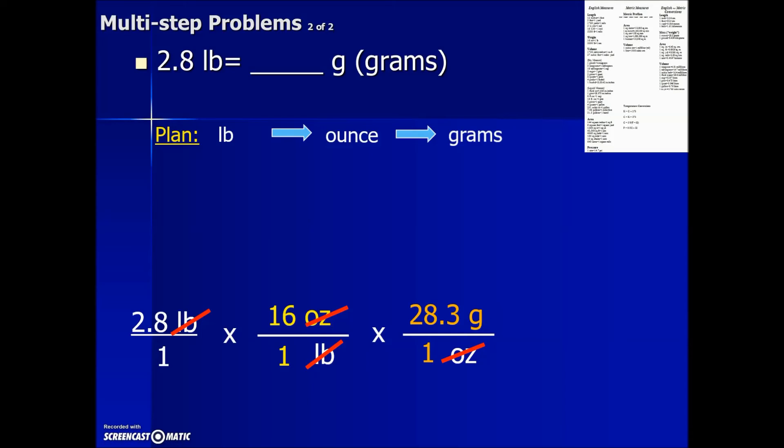Once we have it laid out, now we'll grab the calculator to simplify this fraction multiplication. Multiplying the numerator values together: 2.8 times 16 times 28.3 results in the following value. In the denominator we have three 1's multiplied together, which gives us 1.